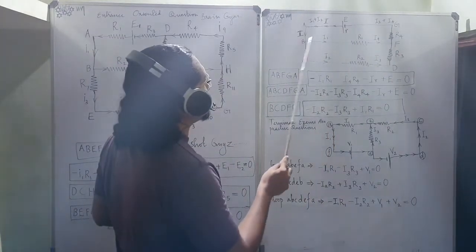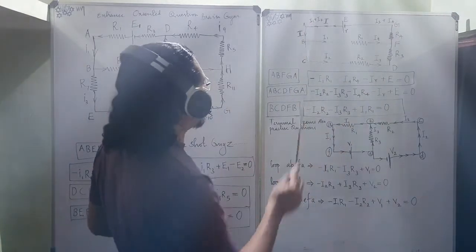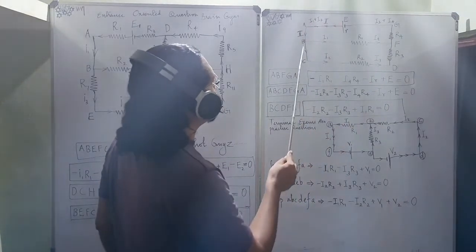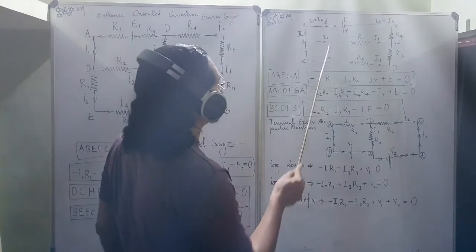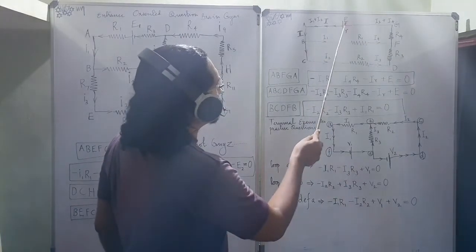Then considering the mesh A-B-F-G-A. So, from here it is. I1 is same direction, minus. Write for the cell over here E. Then negative I1 into R1.